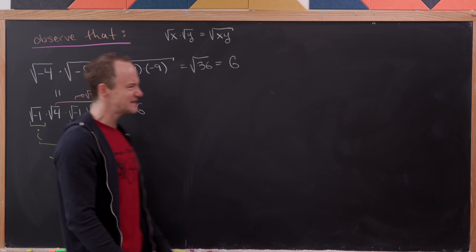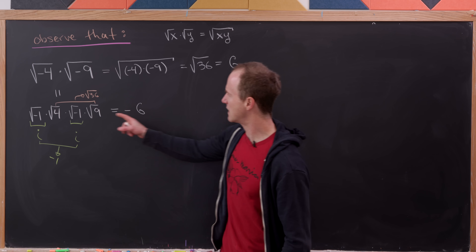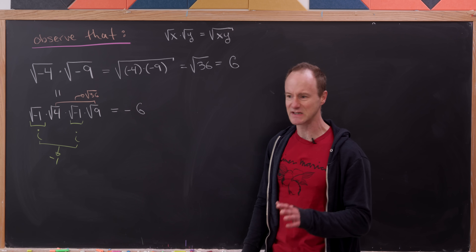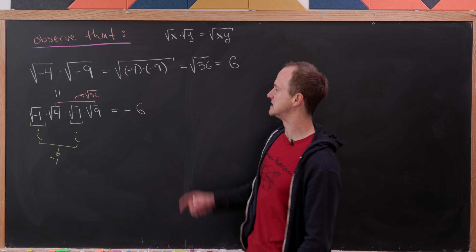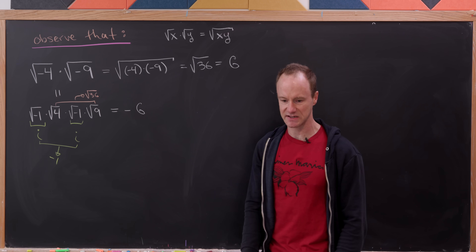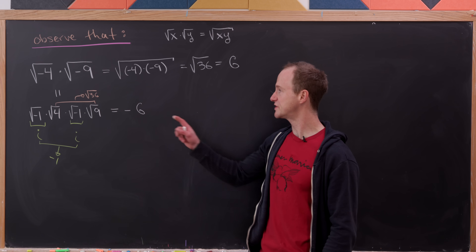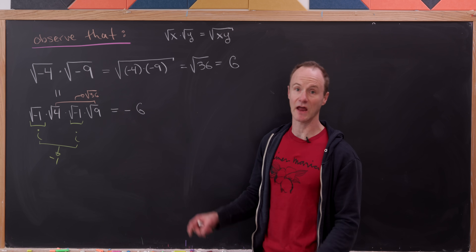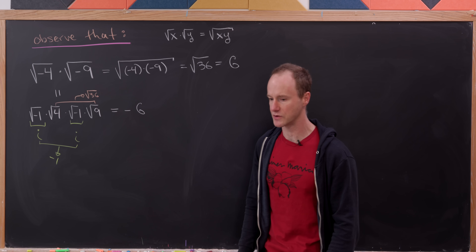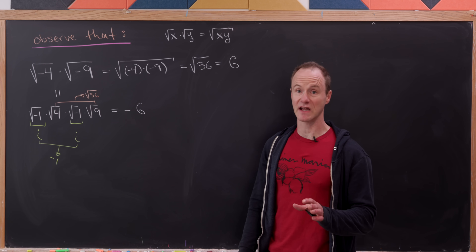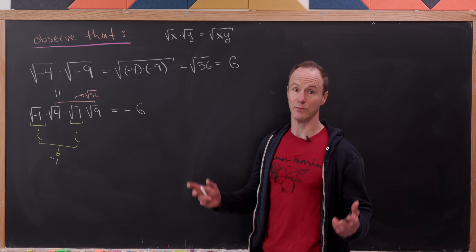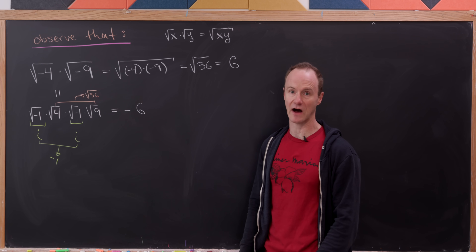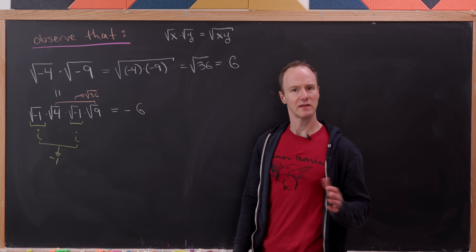We've created this string of equations that seems to say that negative 6 is equal to 6. The question is: which of these calculation techniques is correct and what's the real final value? Unfortunately, I'm going to say that they're both correct and both are the real final value. But let me explain.